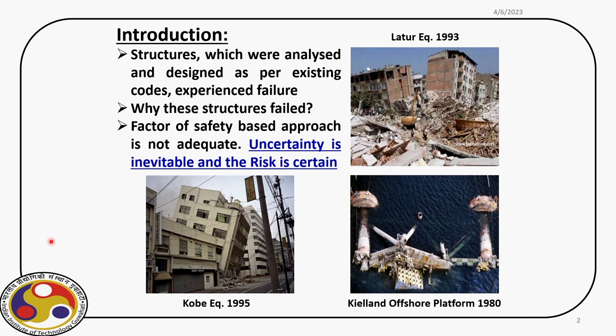In structural engineering, we deal with different types of structures with an aim to ensure safety and serviceability. In that process, we follow design codes that provide certain guidelines so that the end result ensures the safety of the structure. Now if we look at different examples where structures were designed following the existing codes of practice, yet those structures experienced failure for various reasons.